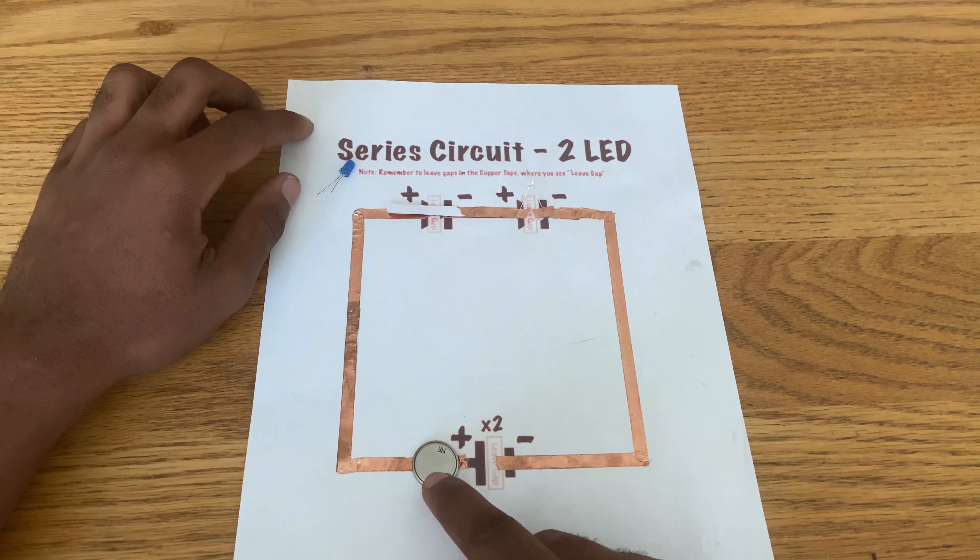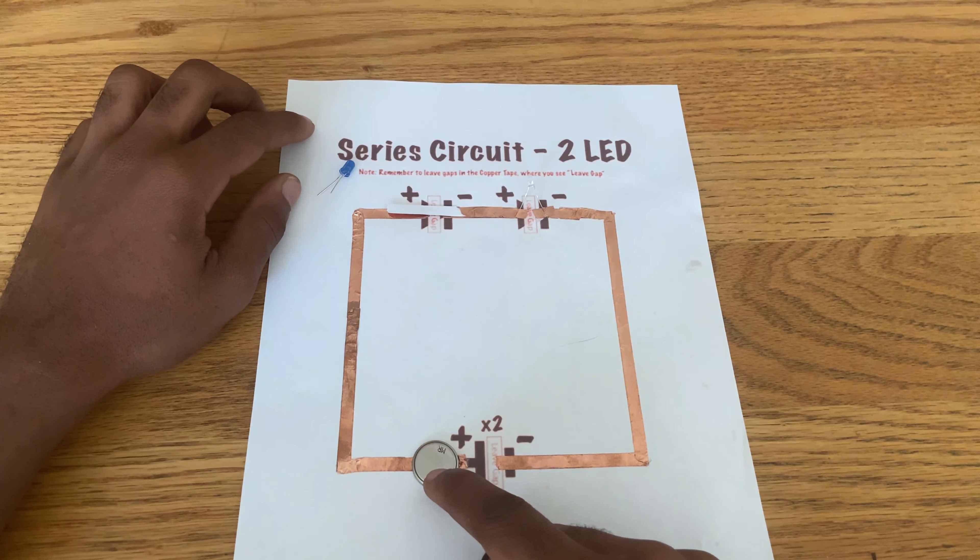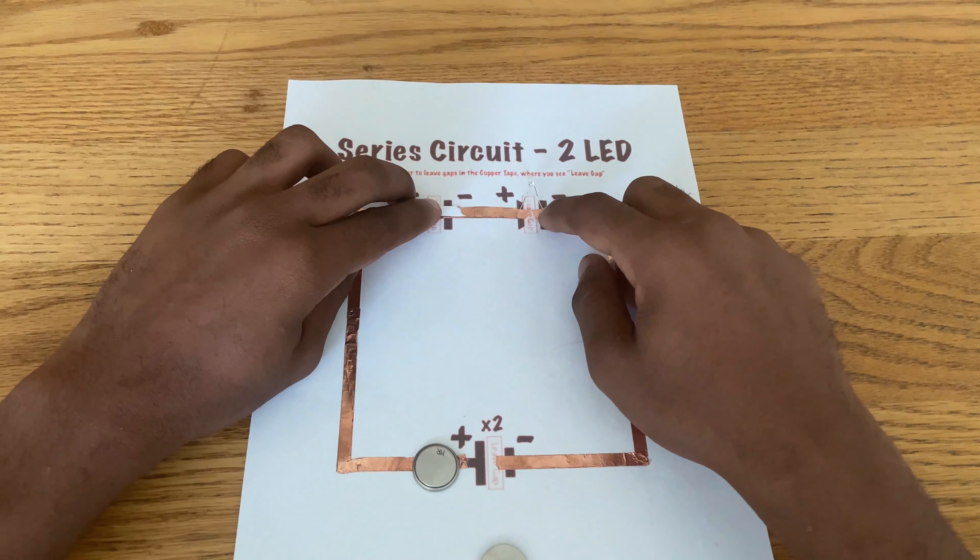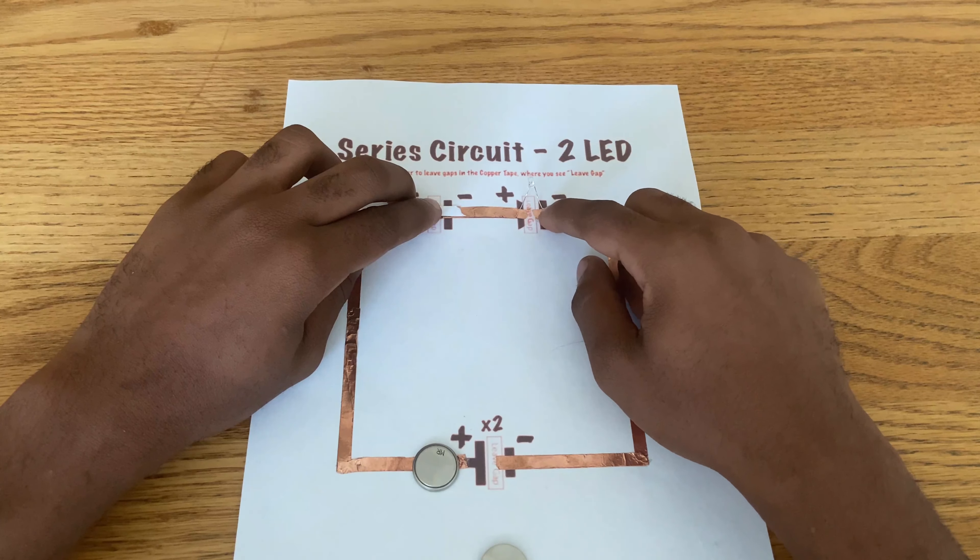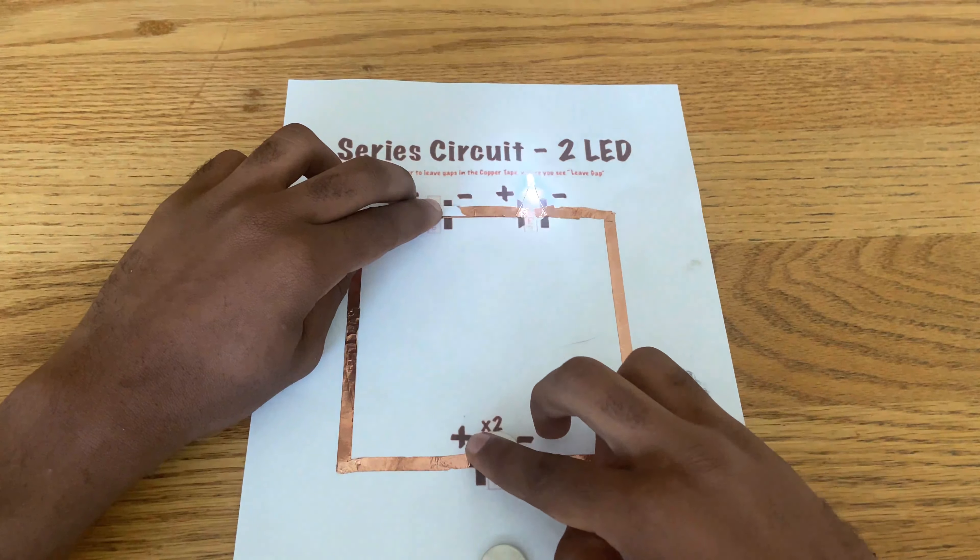This coin battery has three volts, a measurement of force used to move a charge through a circuit. This LED needs two volts to light.